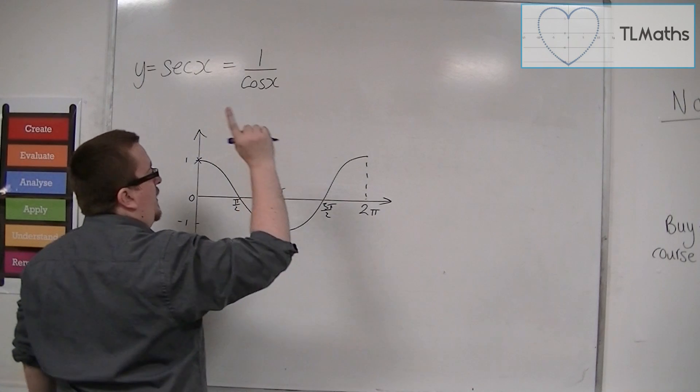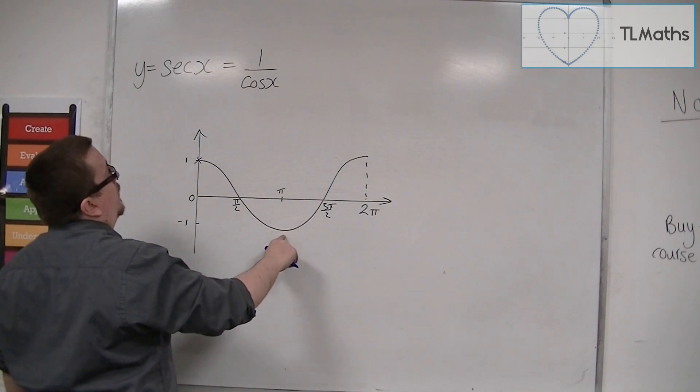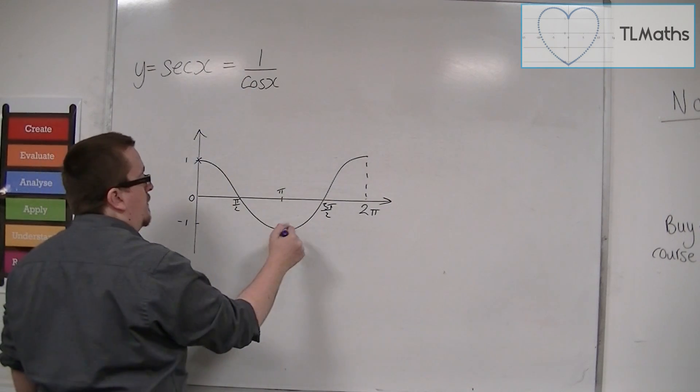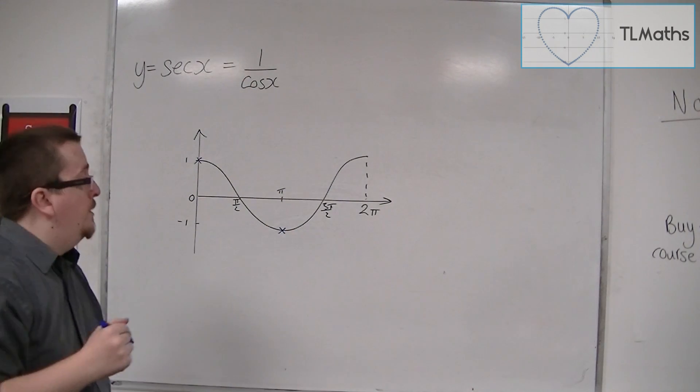And when x is pi, we have cos of pi is minus 1. So 1 over minus 1 is minus 1. So it must go through that point.